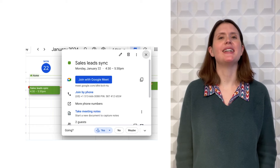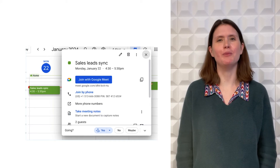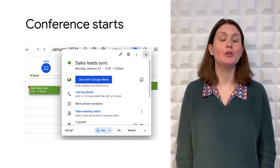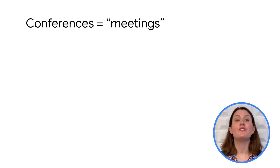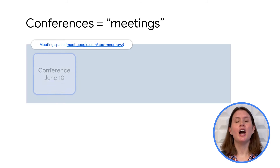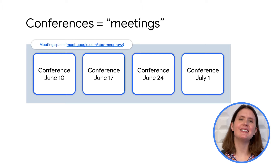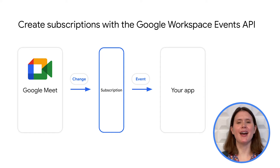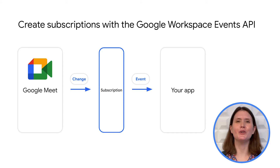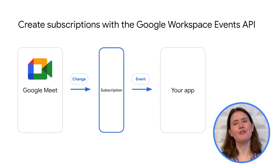So what are Google Meet events exactly? A Google Meet event represents an activity that occurs in Google Meet. Examples include when a conference starts or when a participant joins a conference. If you're new to developing for Google Meet, a conference is an instance of a call within a meeting space. Users typically consider this a single meeting. Using the Google Workspace Events API, you can create subscriptions that notify your app about changes in Google Meet, and your app can then process or respond in a meaningful way for your users.